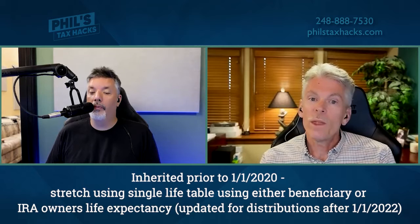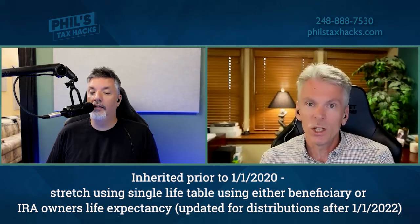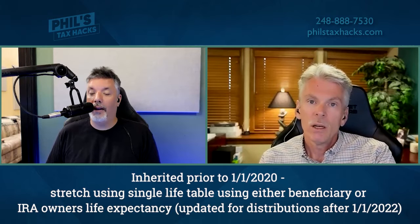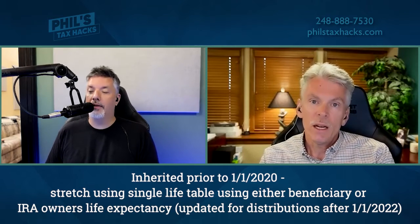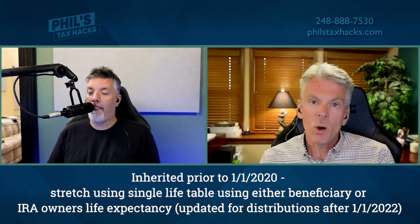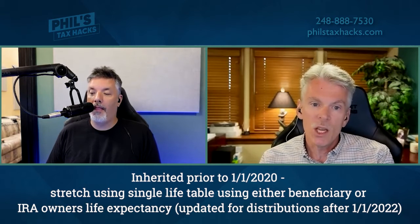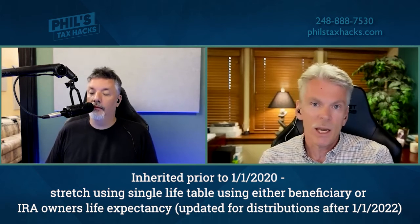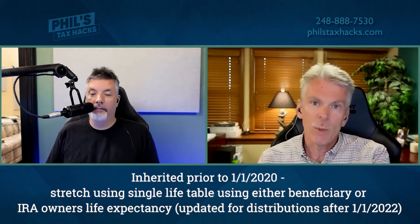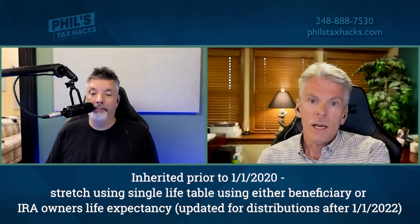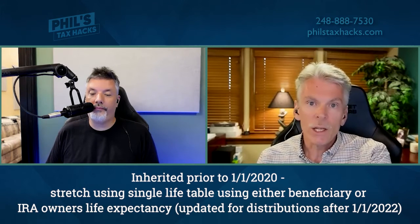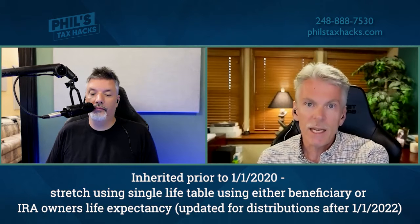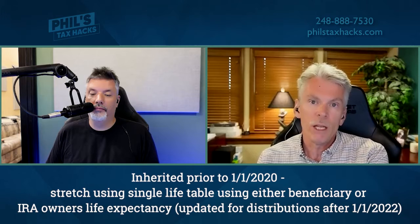With an inherited IRA, it works a little differently than your own IRA. With your own IRA, you go back to the table each year to figure out your distribution. With an inherited IRA, you only go to the table once — the year you inherit it — figure out your life expectancy, and then subtract one from it each year. So if you're 55 and your life expectancy is 22, this year it's 22, next year it's 21, the year after it's 20, and so on.